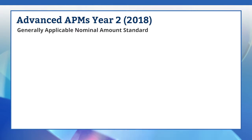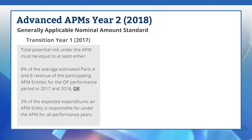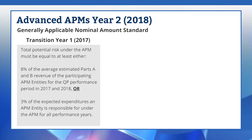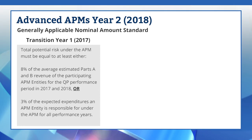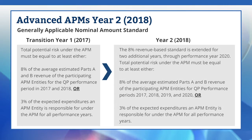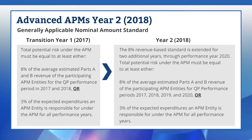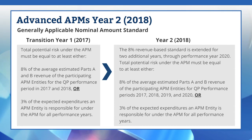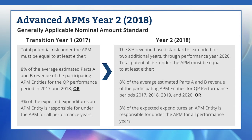Next, let's look at a few variables that apply to Advanced APMs for Year 2 of 2018. For the 2017 transition year, there were two ways that APMs can meet the nominal amount standard, which govern whether an APM imposes at least a nominal amount of financial risk on clinicians. APMs can meet the standard if the total potential risk under the APM was at least 8% of the average estimated Parts A and B revenue of providers and suppliers in participating APM entities. This same standard applies for Year 2 in 2018 and will extend to performance periods of 2019 and 2020 as well. Another way to meet the nominal amount standard is if the total potential risk under the APM is equal to or at least 3% of the expected expenditures an APM entity is responsible for under the terms of the APM. This expected expenditure standard, or benchmark-based standard, is applicable to all performance years.